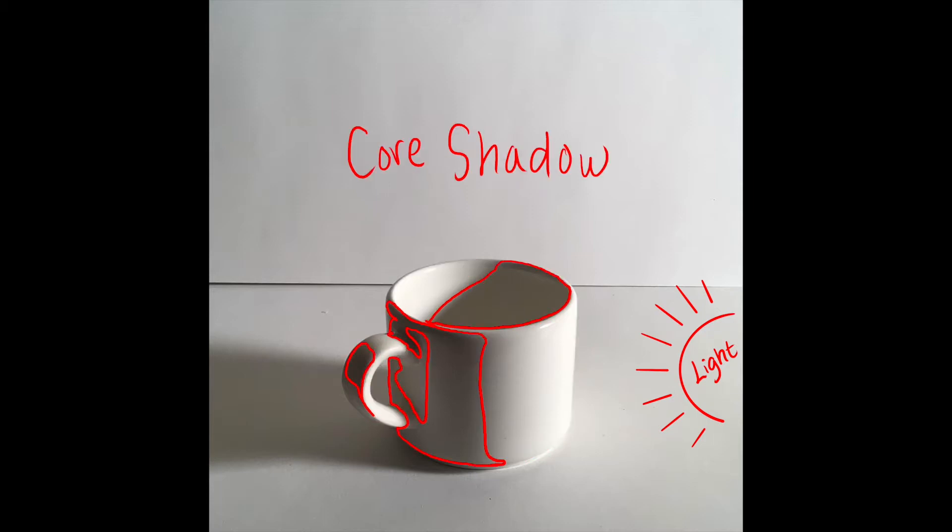Then we have core shadows. These areas are turned away from the light rays. They are darkest in tone, in low key. Details are difficult to see in core shadows because they lack illumination.